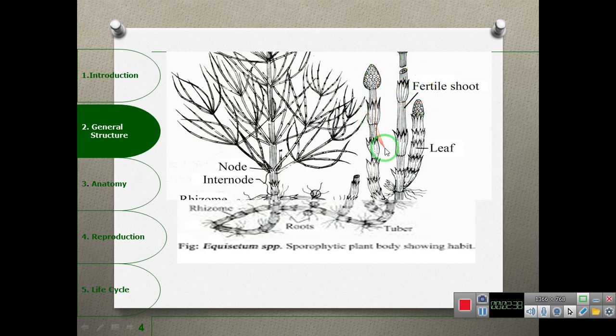The fertile branches are brown, while sterile branches are green. Fertile branches do not have lateral branches, but infertile branches have lateral branches that arise from nodes. These are the leaves at the nodes.